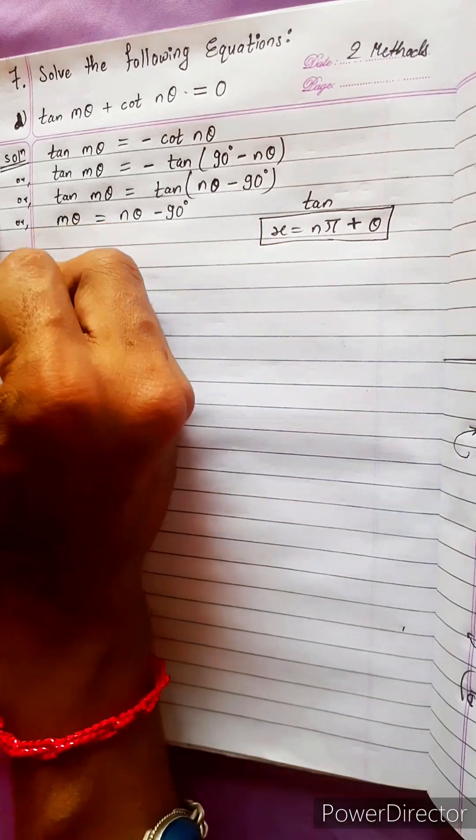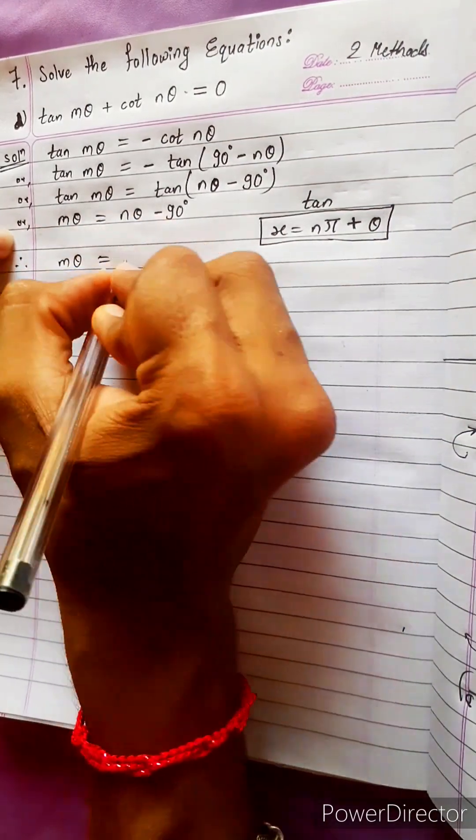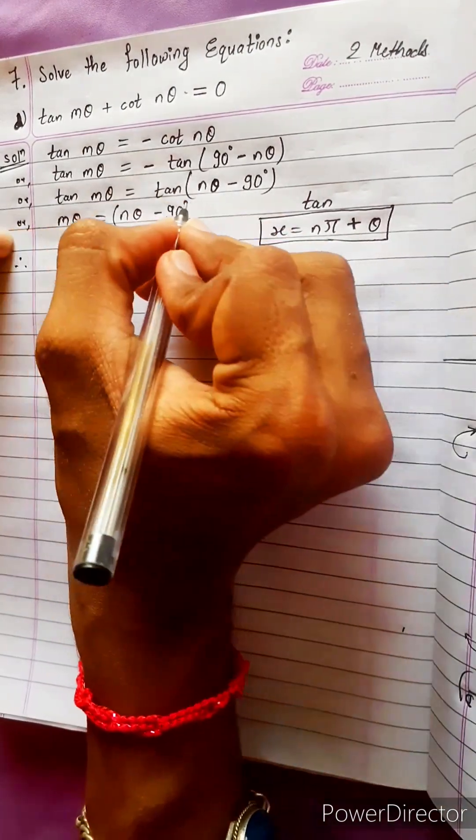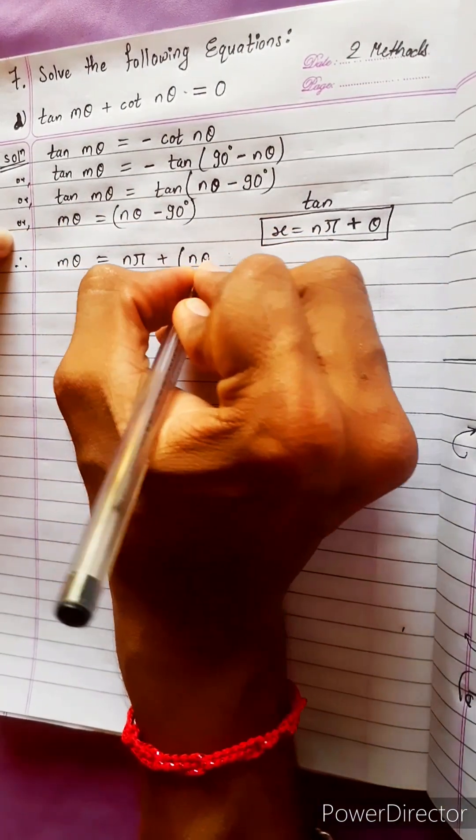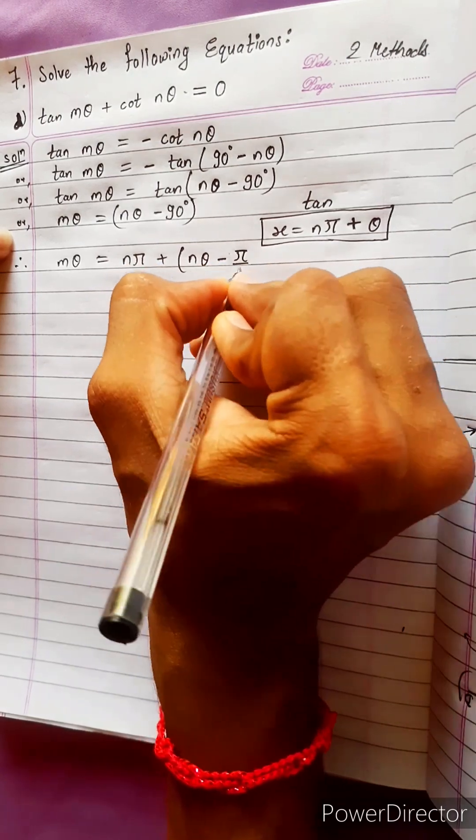Then use this. X means this side, x means m theta equals to n pi plus theta means this angle n theta minus 90. Let's write like this pi by 2. Pi by 2 means 90. 180 by 2 equals to 90.